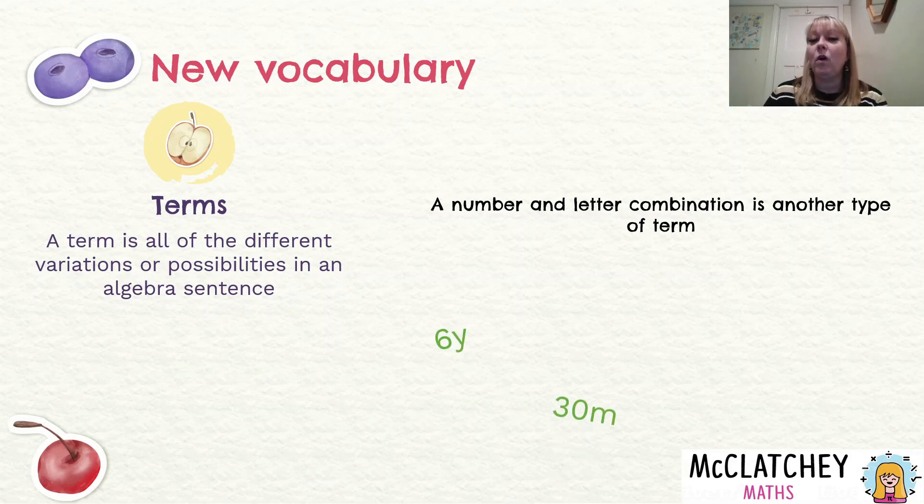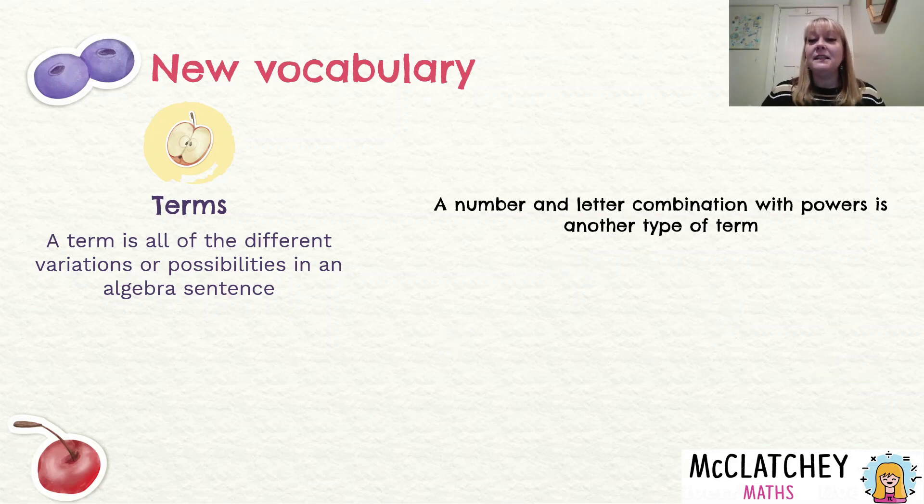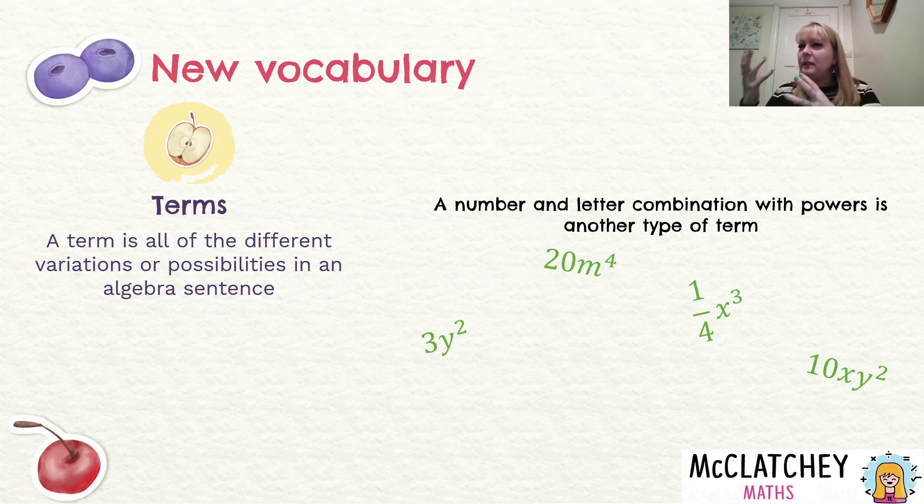A different kind of term is a number letter combination. That's another type of term. So if I had 6y, 30m, half an x, 15ab, any number letter combination you could possibly think of, you could have 10 and then whole letters of the alphabet after it. That is what we call a term. And we also have letter number combinations with powers as well, that's a different type of term again. So here are some examples. We've got 3y squared, 20m to the power of 4, a quarter of an x cubed, and 10xy squared. So we can see we're bringing in letters with numbers, multiple letters together, powers, even if we brought square roots in, they're also a type of term.